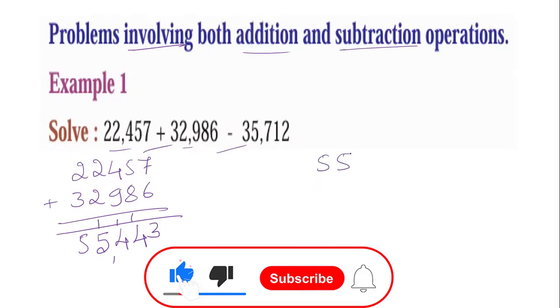Subtract 35,712 from 55,443. Put subtraction sign. 3 minus 2 is 1. 4 minus 1 is 3. 4 minus 7 is not possible, borrow 10 from nearby house, it becomes 14. 14 minus 7 is 7, carry 1. 5 minus 1 is 4. 14 minus 7 is 7. 5 minus 1 is 4, minus 6 is not possible, so 15 minus 6 is 9, carry 1. 5 minus 4 is 1, minus 1 gives us 19,731.